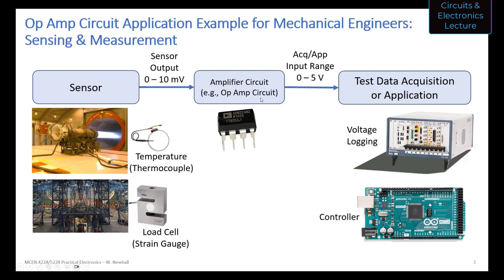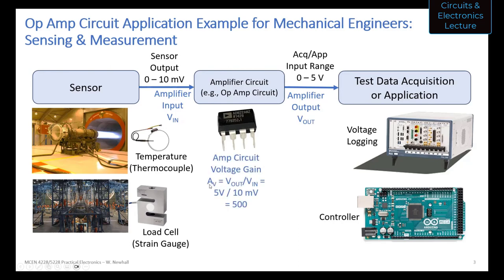The DAQ device has a finite resolution — it might only measure in increments of 10 millivolts. So if your sensor outputs 0 to 10 millivolts, you're not getting any useful resolution. This is where an amplifier circuit is needed — an op amp circuit like the inverting or non-inverting amplifier that multiplies the input voltage by a gain. For example, to scale 10 millivolts up to 5 volts, the required voltage gain Av would be 5 divided by 0.01, which equals 500.